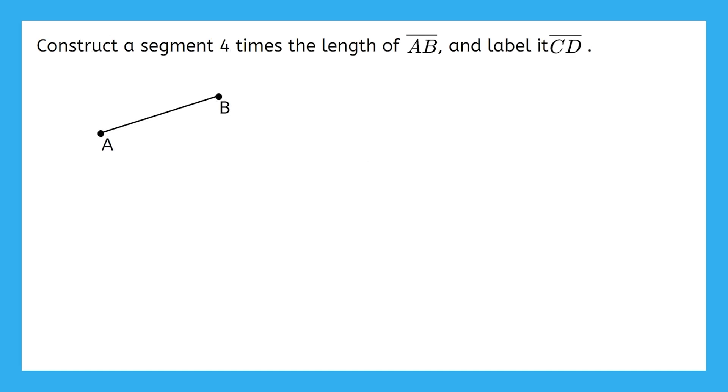Let's do one more example. This time we're going to construct a segment four times the length of segment AB and label it segment CD. First, use your straightedge to draw a line segment. Make sure the line segment looks at least four times longer than segment AB. Since our new segment will be called segment CD, place point C at one end of the segment.